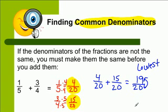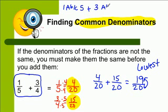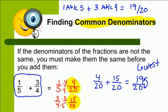That can be confusing, so if you have a calculator handy, go ahead and use it. On the calculator you would press: 1, then the A B/C button, then 5, then plus, then 3, then the fraction key, then 4, then equals. On your calculator you will see 19 over 20.